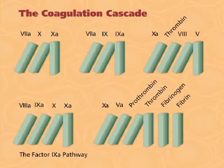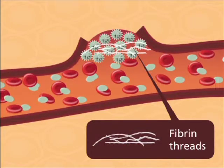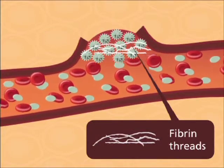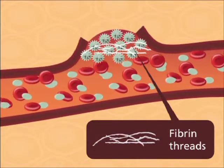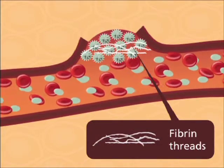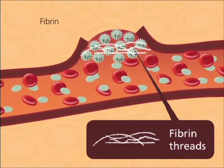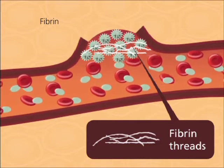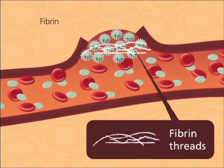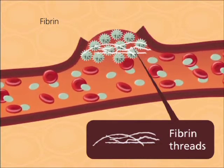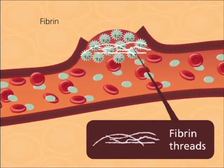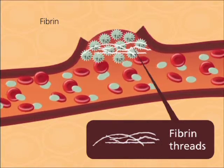It is thrombin that then allows the conversion of fibrinogen to fibrin. While the process of the coagulation cascade as outlined can be confusing and difficult to retain, it is most important to remember the importance of the final result: fibrin in wound healing. Fibrin is the biological glue that eventually seals the hemostatic plug and ensures hemostasis.